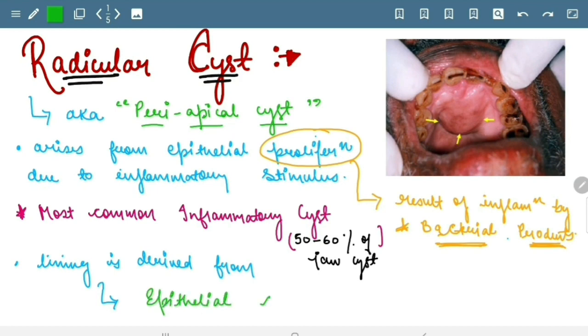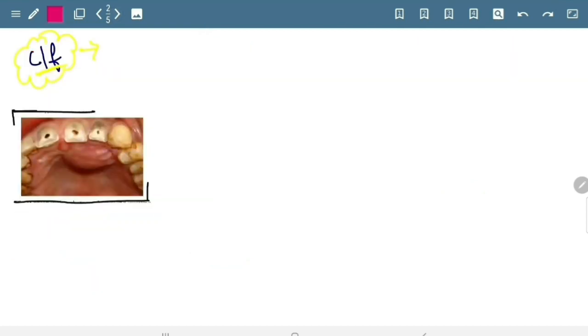Okay, now moving towards its clinical features. It is most common inflammatory cyst, found in 3 to 60 years of age, predominantly in males.